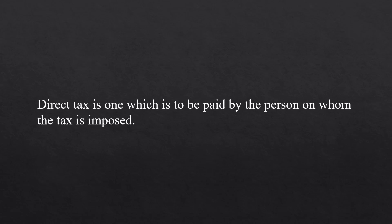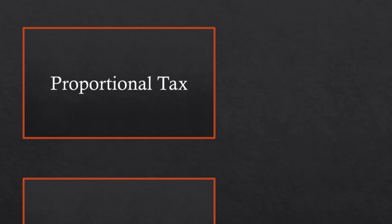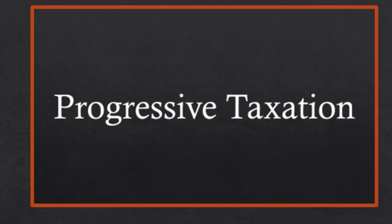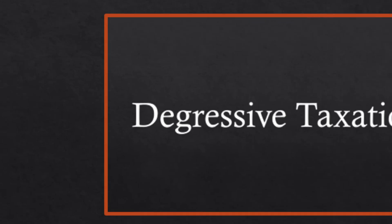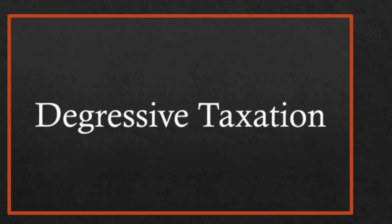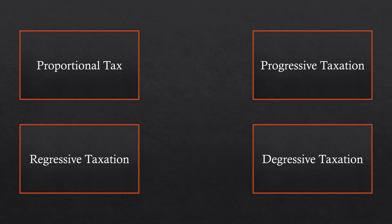Direct Tax is one which is to be paid by the person on whom the tax is imposed. It is mostly levied on the income of individuals and corporates. While applying a tax rate, income becomes the basis. Tax is classified as Proportional Tax, Progressive Tax, Regressive Tax and Digressive Tax. We shall see them one by one with numerical examples and their effect on income distribution with graphs.